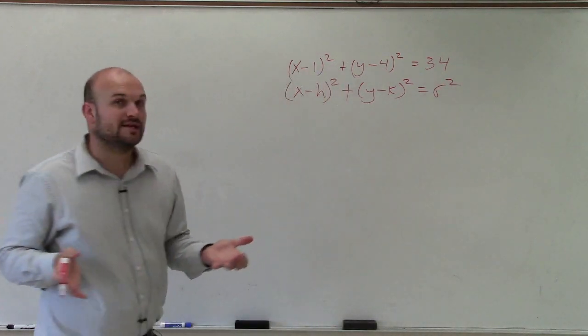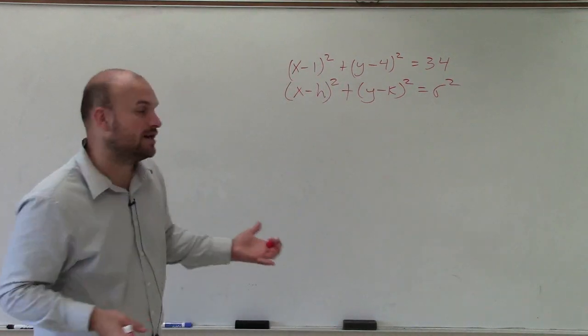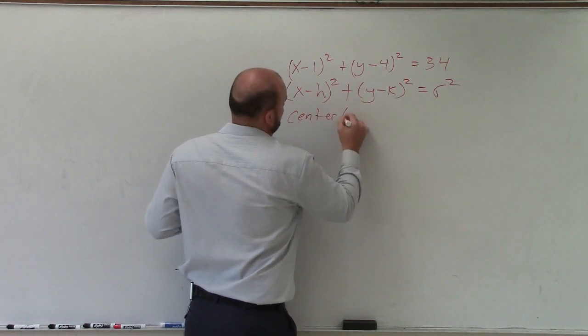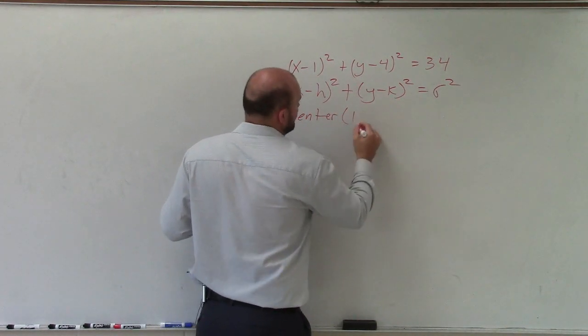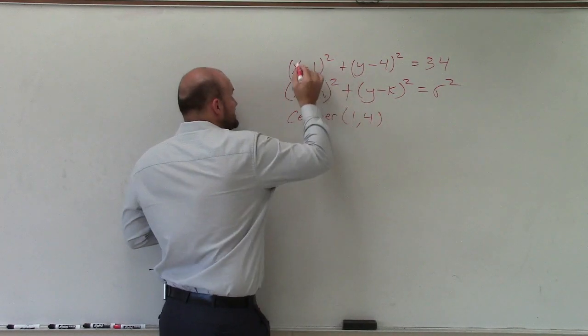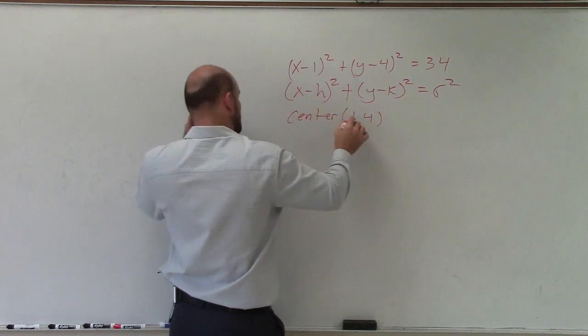Now all I need to do is determine the center and the radius. The center is h comma k, which is positive 1, 4. It's x opposite of h, opposite of 1, so it would be (1, 4).